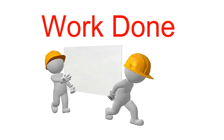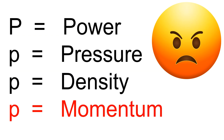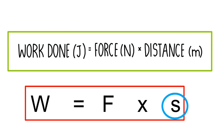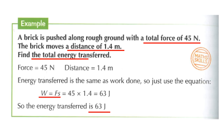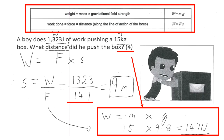Work done is equal to force multiplied by distance: W = F × s. Note that distance uses the symbol s, not d, because d, p all represent other quantities. Work done and energy are the same thing, both measured in joules. In exam questions you must convert kilograms to Newtons first using weight = mass × gravity, then rearrange for distance.